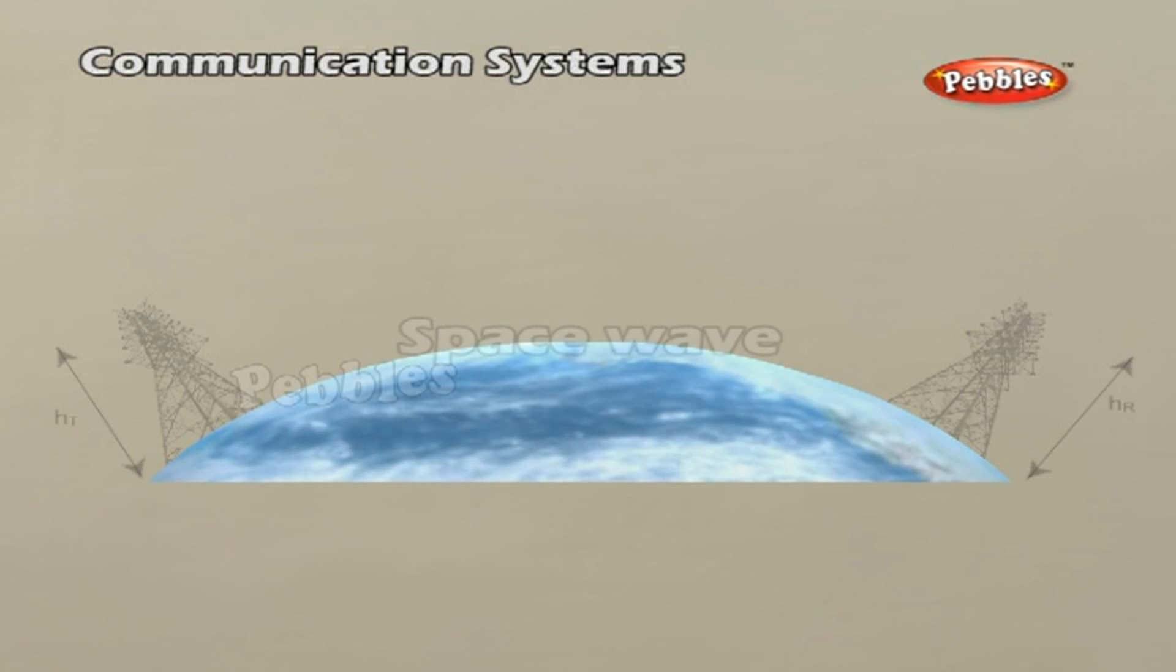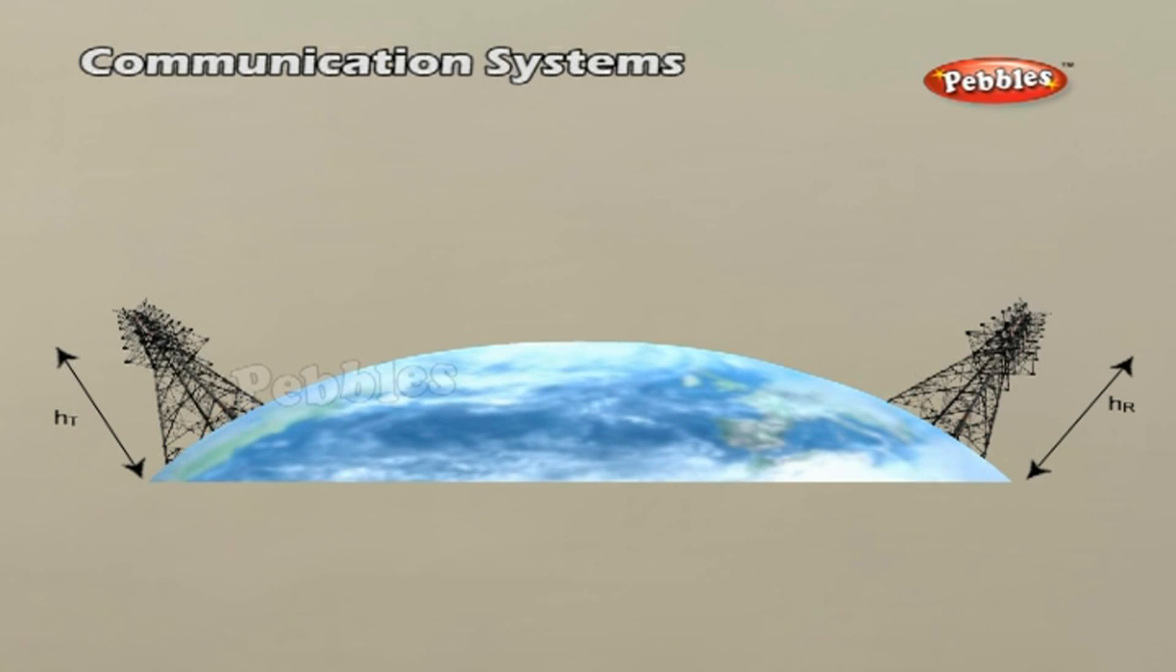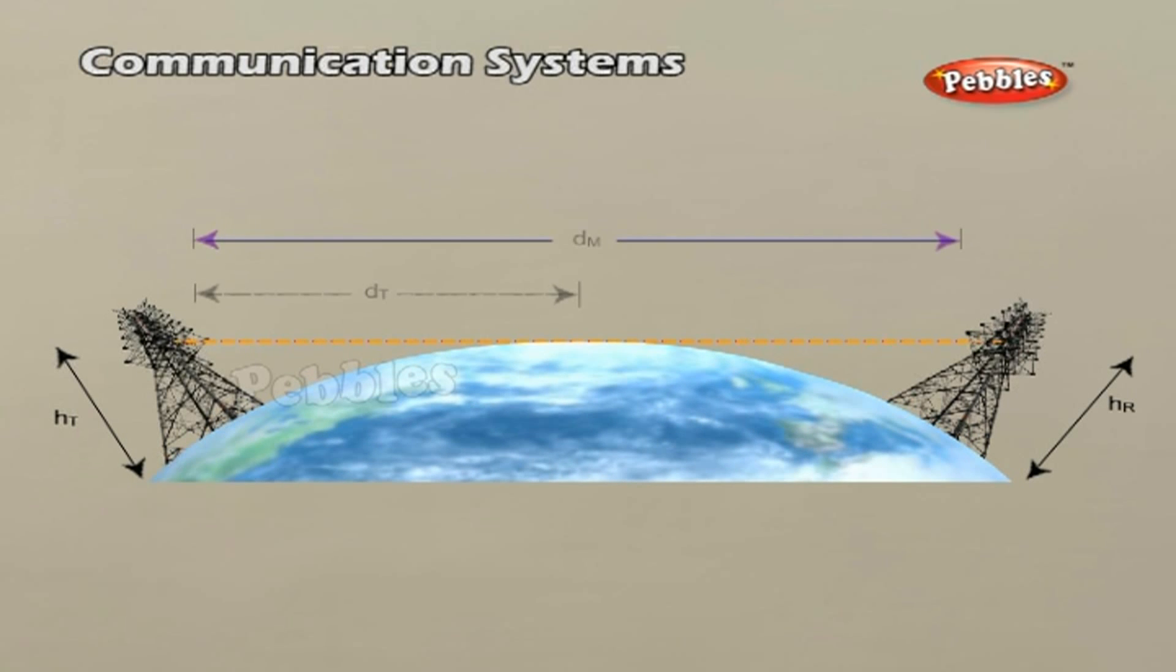Space wave. Another mode of radio wave propagation is by space waves. A space wave travels in a straight line from transmitting antenna to the receiving antenna. Space waves are used for line of sight communication as well as satellite communication.